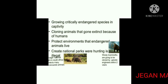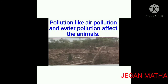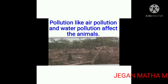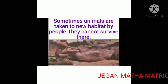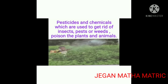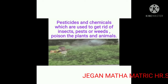Growing critically endangered species in captivity and cloning animals that go extinct because of humans are some measures. We should protect environments where endangered animals live and create national parks where hunting is illegal. Pollution like air pollution and water pollution affect the animals. Sometimes animals are taken to new habitats by people. Pesticides and chemicals used to get rid of insects, pests, or weeds can poison plants and animals.